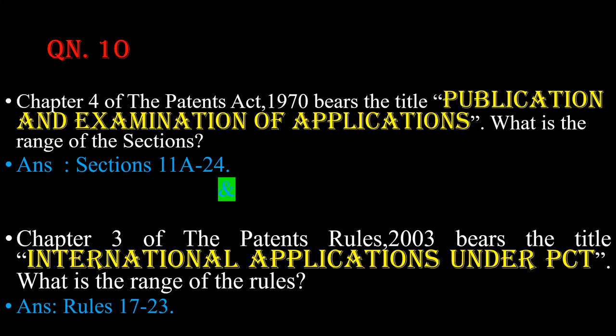Question number 10: Chapter 4 of the Patents Act 1970 bears the title publication and examination of applications. What is the range of these sections? The answer is sections starting from 11a and ending at 24. Chapter 3 of the Patents Rules 2003 bears the title International Applications under PCT. The range of the rules is rule starting from 17 and ending at 23.